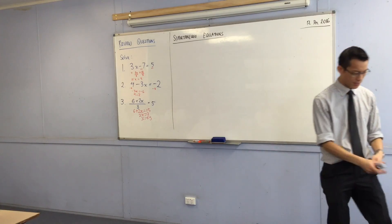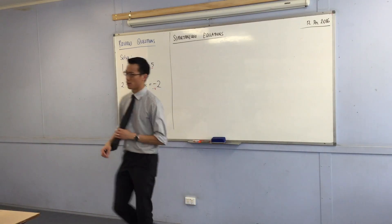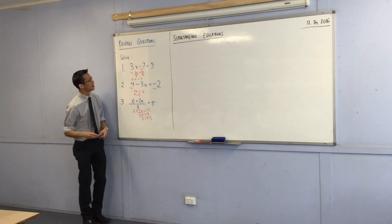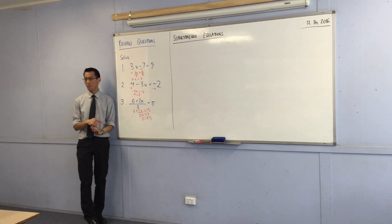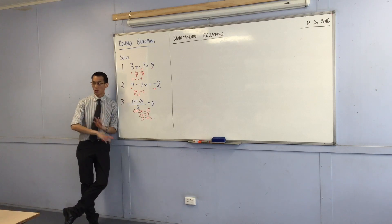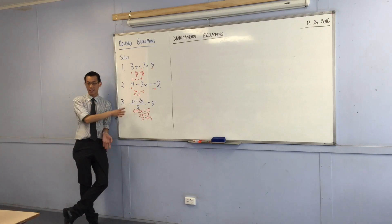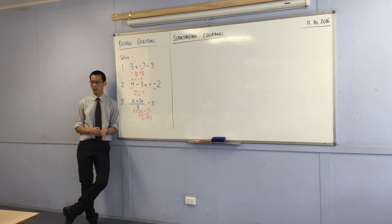We've got three questions, three answers. Before we have a look at the answers, I want us to all look at the first one together. And regardless of whether the value at the bottom is right or wrong, I think there's a quick, easy way all of us can very simply improve this solution — not add anything to it. There's actually something we could take away that would make it a little bit clearer. Any suggestions?